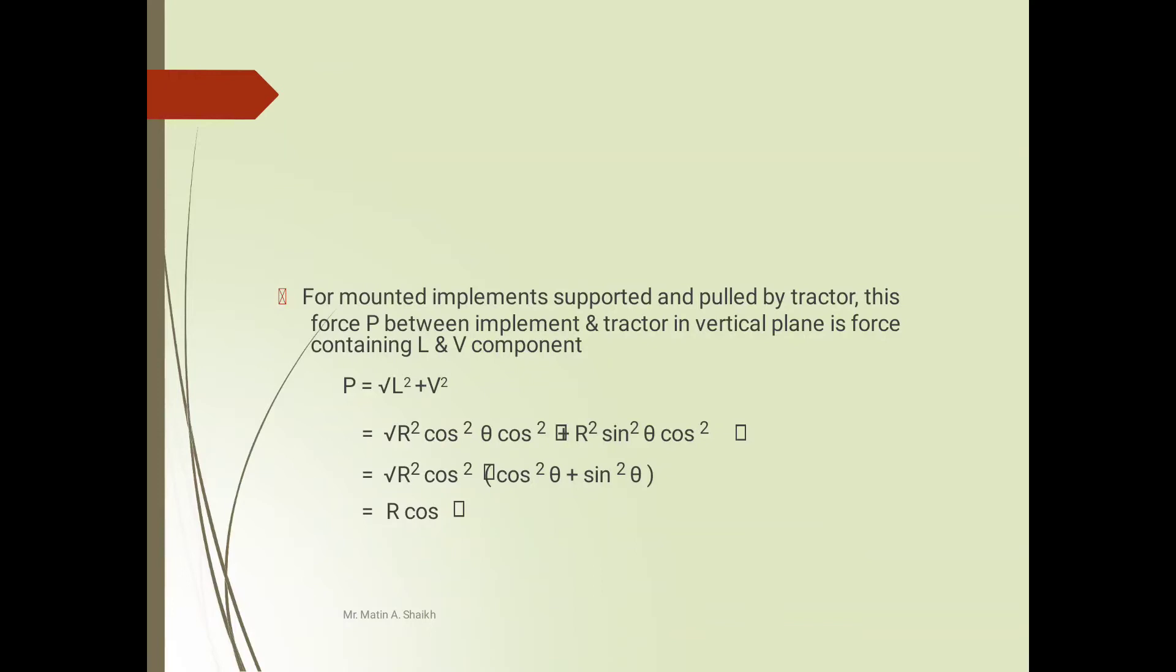This is all related to force analysis of moldboard plough. In that topic we have seen the major three components: horizontal force, vertical force, and side force. How this angle is made between vertical and horizontal plane, what is meant by theta, what is meant by phi, and how this equation is modified to get the final value, the pull which is R cos φ. Thank you, friends.